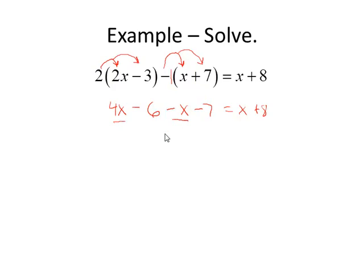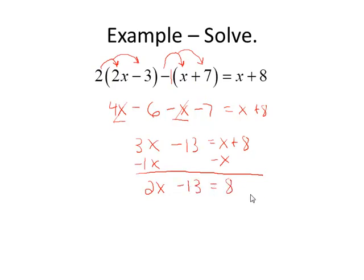Combine like terms. 4x minus x is 3x. Cross those off so I know I've used them. Negative 6 minus 7 is negative 13. I want to collect all the variables on one side. I can do that by subtracting x. A common mistake here for students is to think 3x minus x just gets rid of the x. Again, you want to think of this as 1x. So 3x minus 1x is 2x. Still have an 8 on the other side. Get the constant to the right. 2x equals 21. And divide by 2. And that does not divide evenly. And I can't reduce it either. So my solution x equals 21 halves.